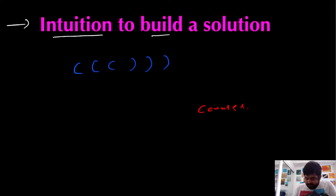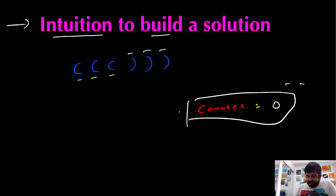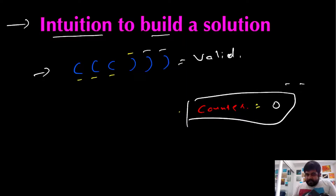Let's see that in action. We have three opening brackets, so we increment the counter three times to get a value of three. Then we identify a closing bracket, so the value goes from three to two. We identify two more closing brackets, so it gets decreased two more times, giving a final counter value of zero. Because we get zero, we can say this string is actually valid.